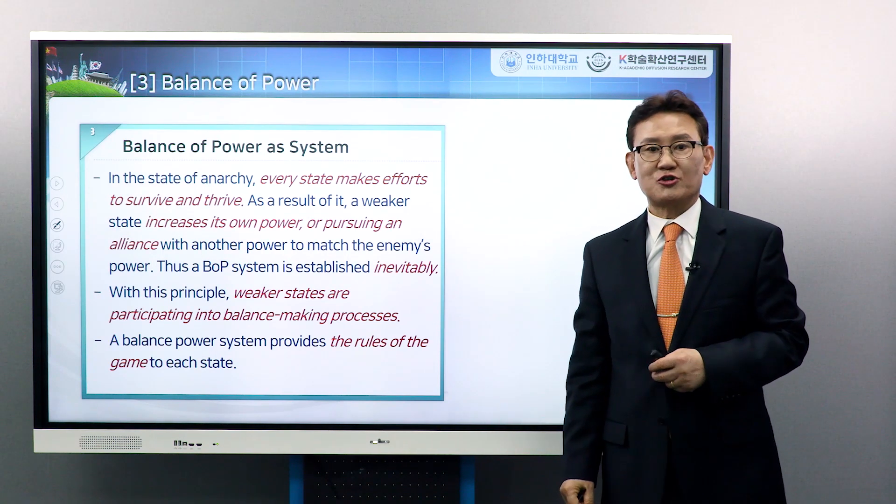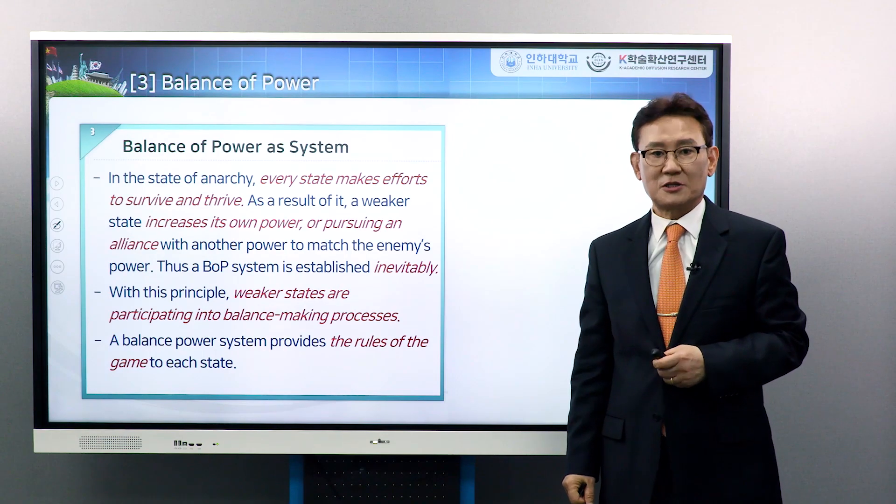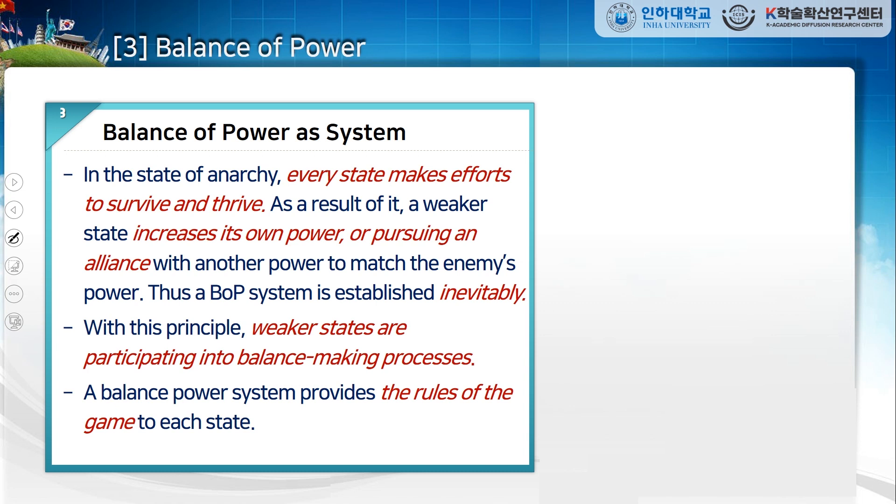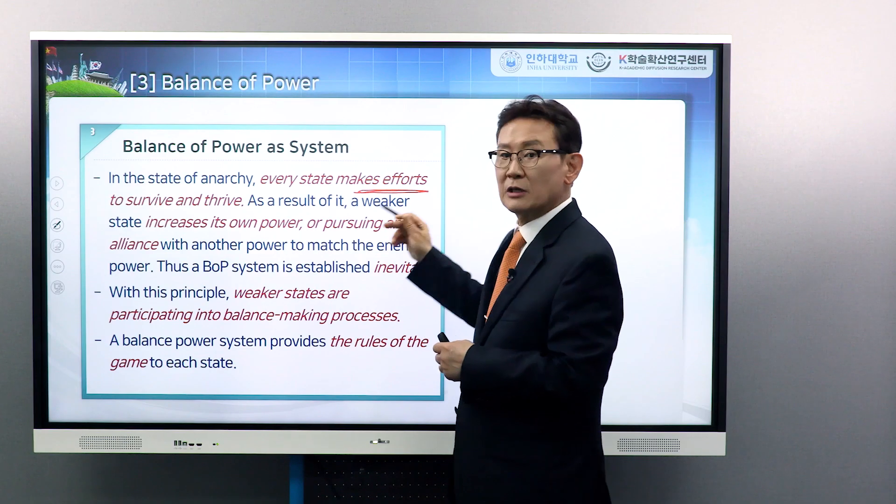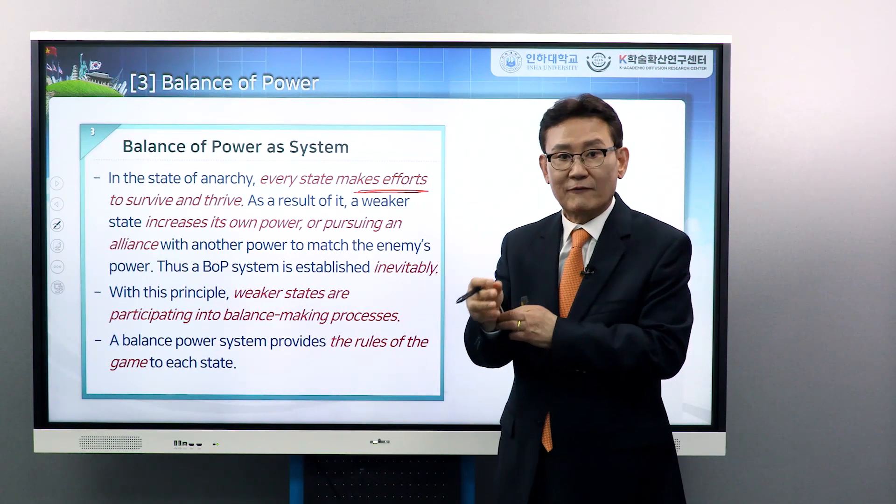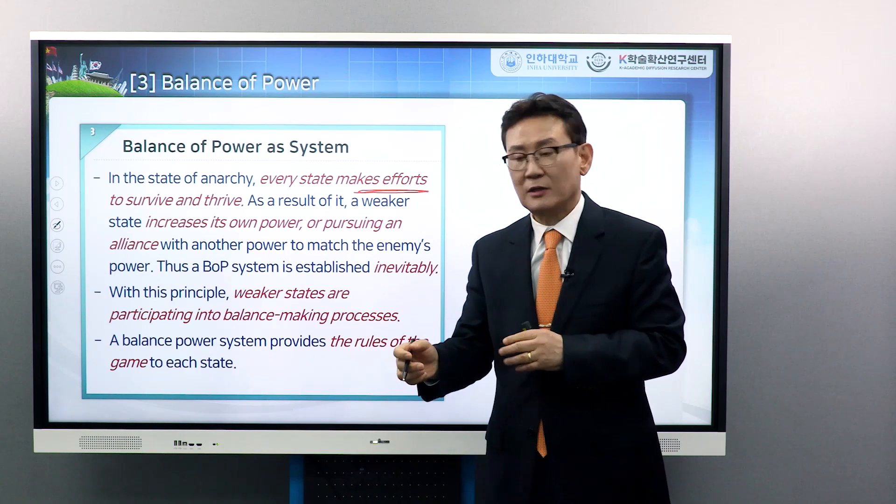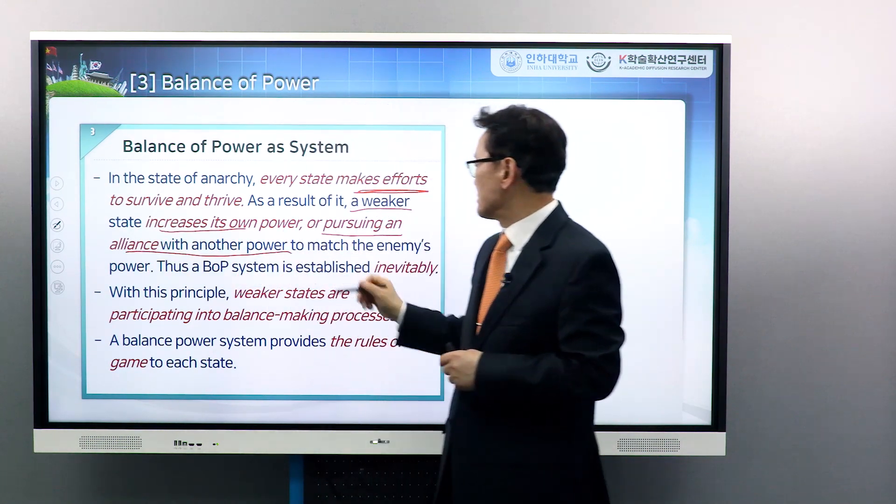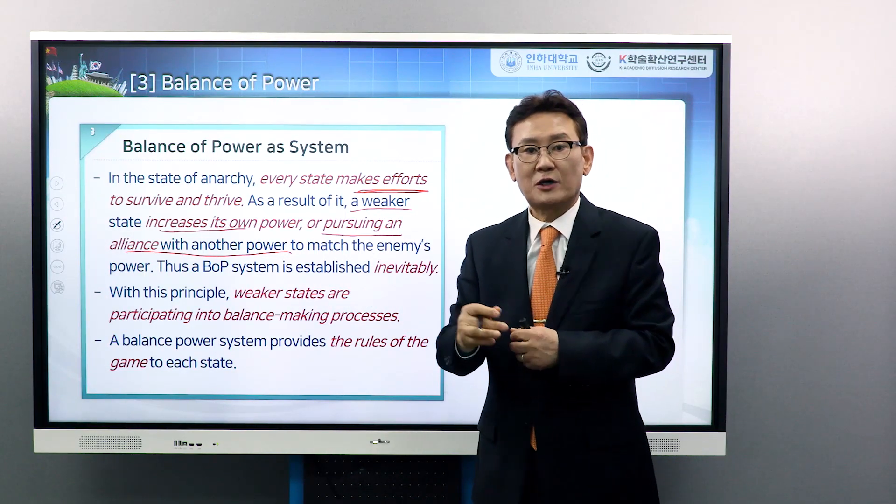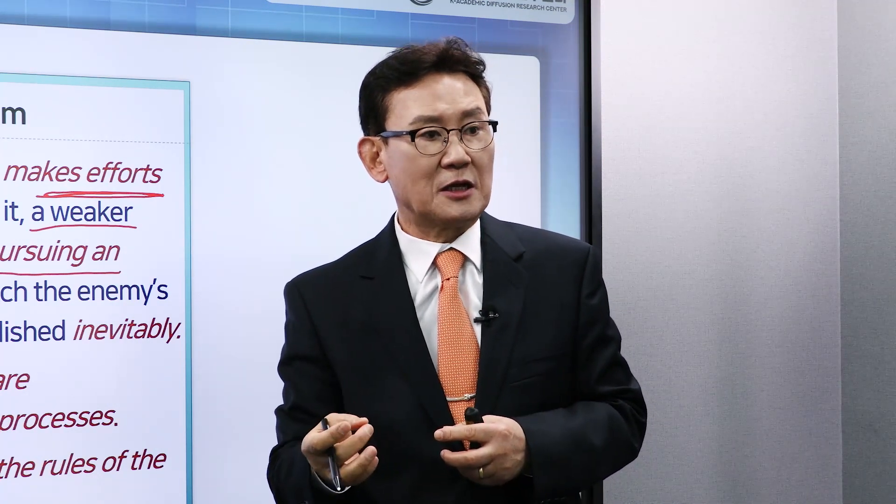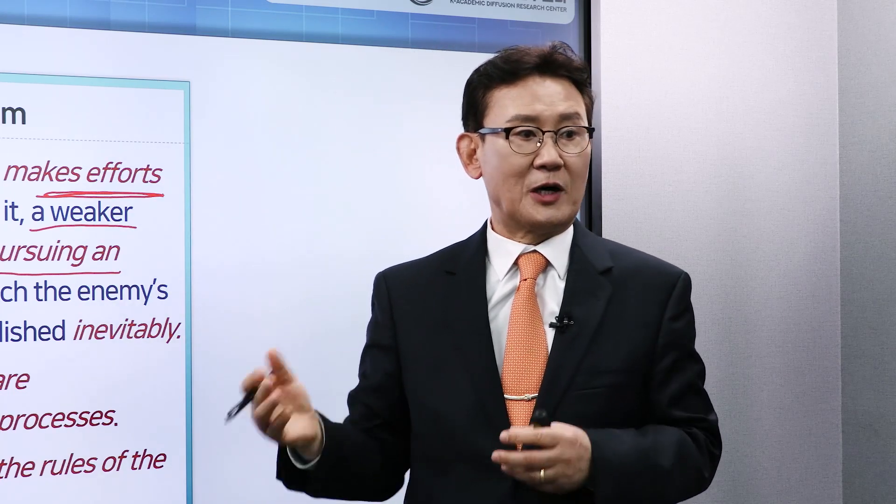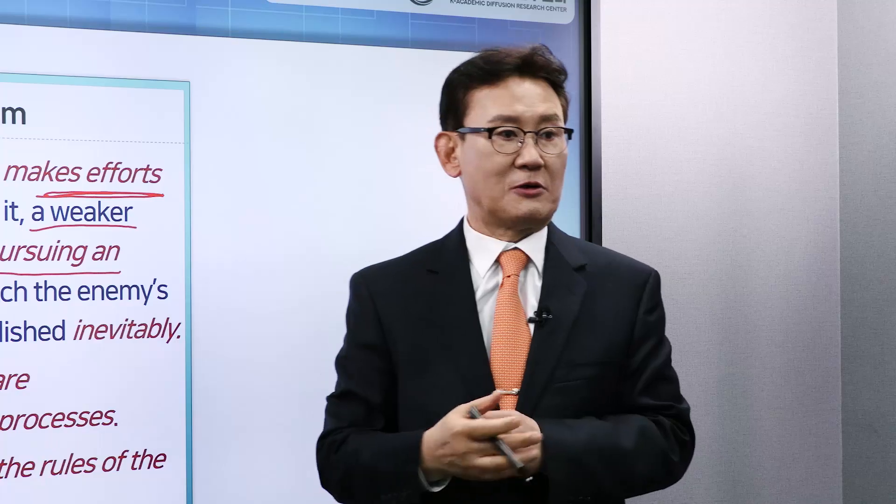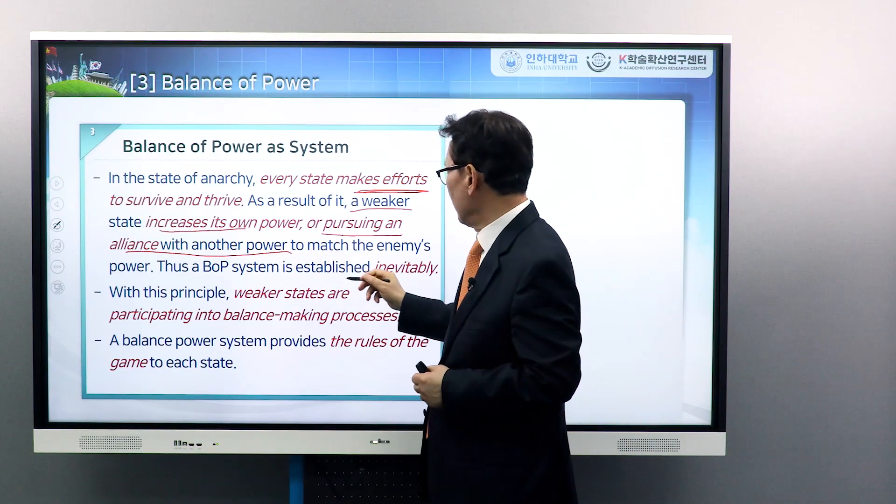Now, the last usage of balance of power is balance of power as system. In the state of anarchy, each country makes efforts to survive and be prosperous, to thrive. As a result, each country has the same functions to make efforts to survive and thrive. A weaker country increases its own power or pursues an alliance with other powers to match the enemy's power. So balance of power system is established inevitably.